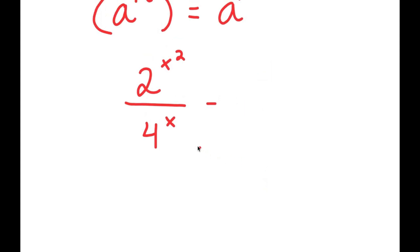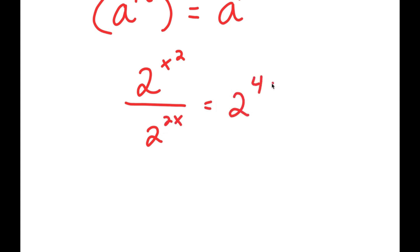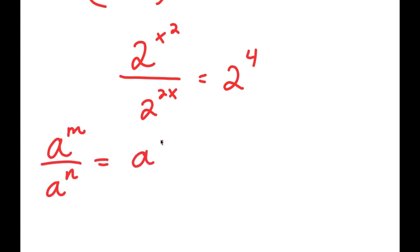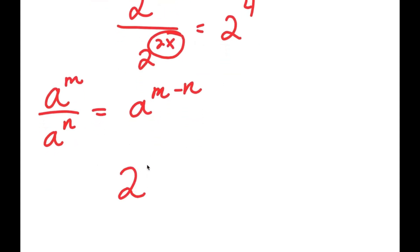Sorry, that is 2 to the power of 2x, which is equal to 2 to the power of 4. Now from here, if I have something in the form a to the power of m over a to the power of n, this is equal to a to the power of m minus n. So in this case, m is x squared and n is 2x, so I get 2 to the power of x squared minus 2x is equal to 2 to the power of 4.